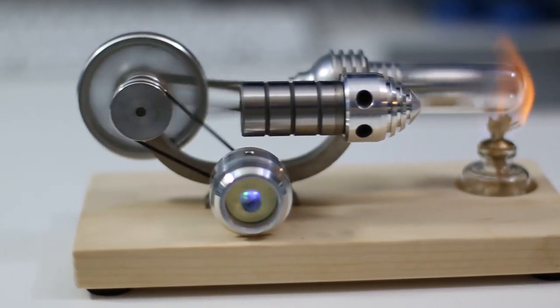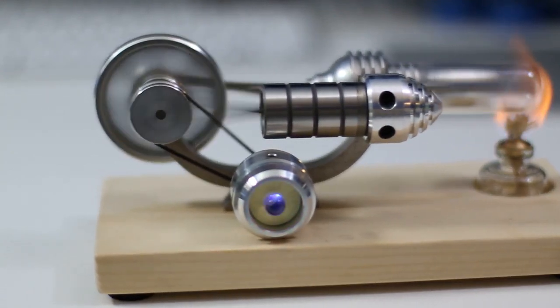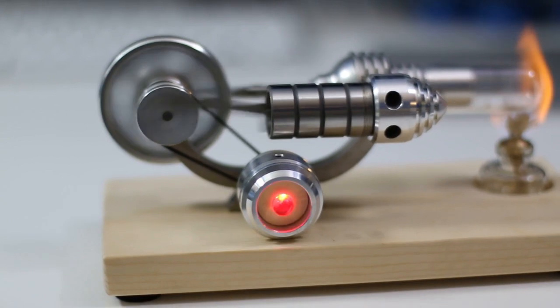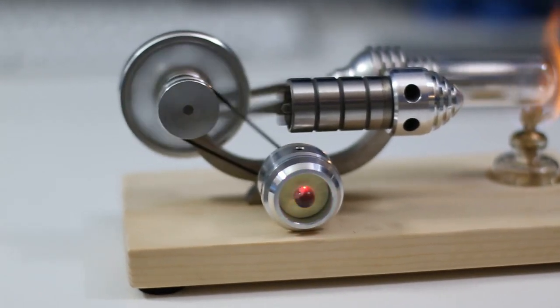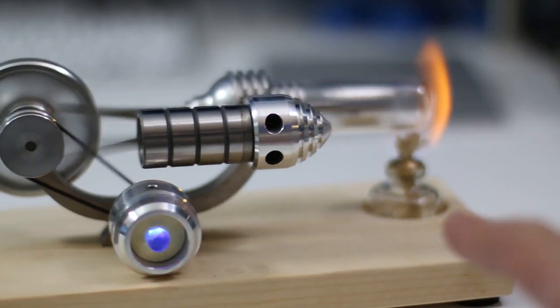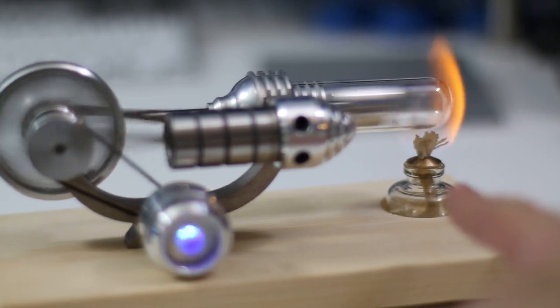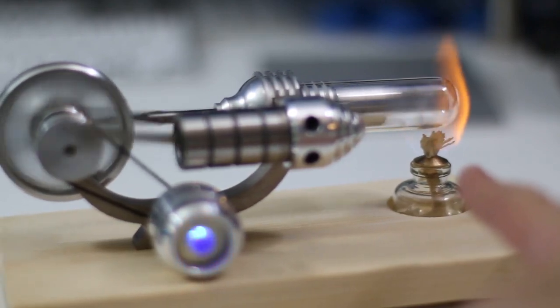Here it is, the Sunny Tech Sterling engine, which is an external combustion engine. An external combustion engine means that we've got combustion coming from this little alcohol lamp which has a wick in it, creating external combustion.